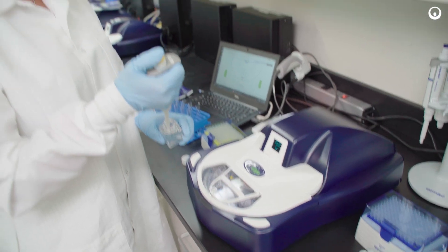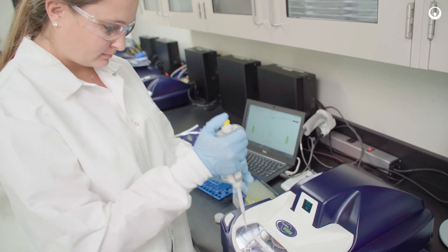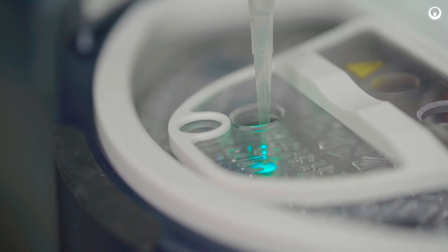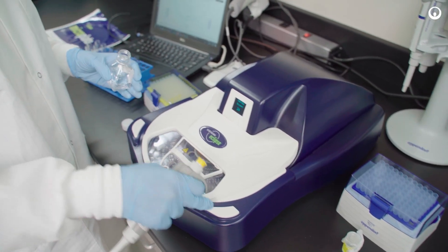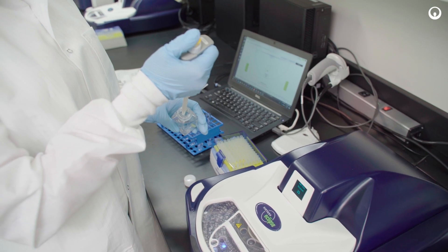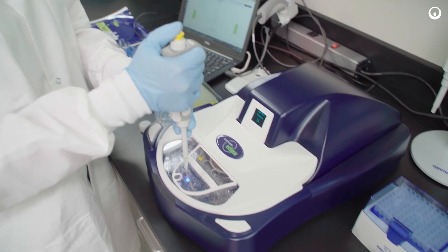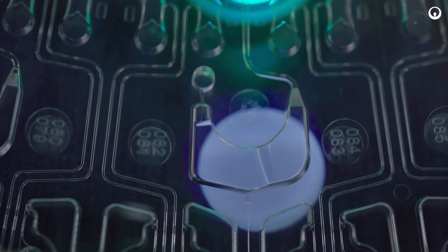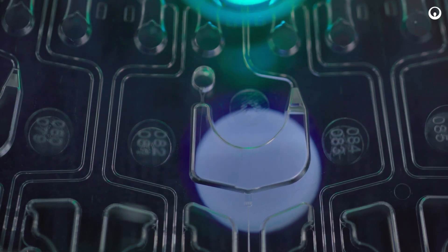We're able to significantly reduce the pipetting steps required to get a fully compliant endotoxin assay started by leveraging microfluidic liquid handling along with embedded endotoxin standards and positive product controls to easily and quickly begin a fully compliant endotoxin assay in as few as 27 pipetting steps to have a fully compliant 21 sample assay.